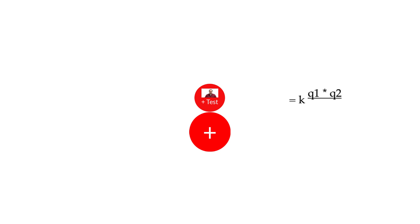Now let's say I could turn myself into a positive test charge and place myself near a positive source charge that I'm trying to describe. When I place myself really close, Coulomb's Law tells me that the smaller the distance, the stronger the force. So if I'm really close, I'm going to feel a lot of force. And because our charges are the same, I'm going to feel a repulsive force — a push away.